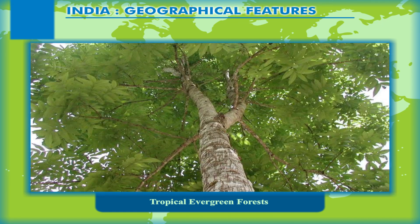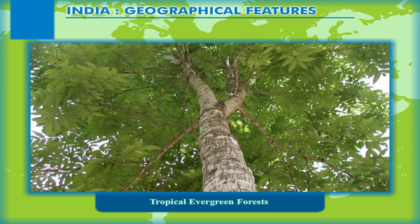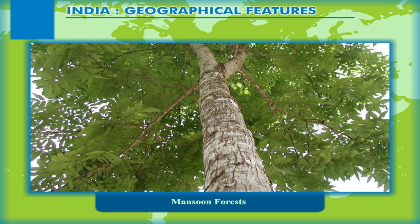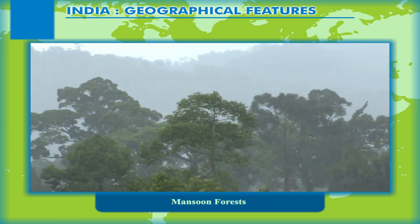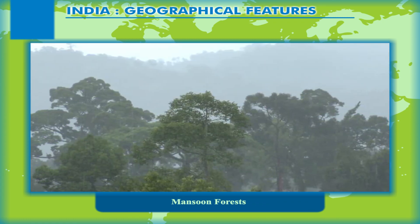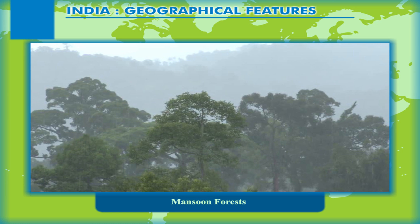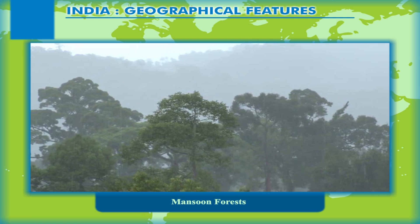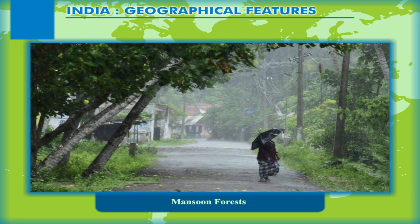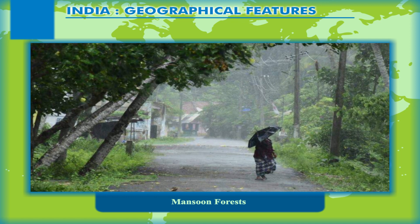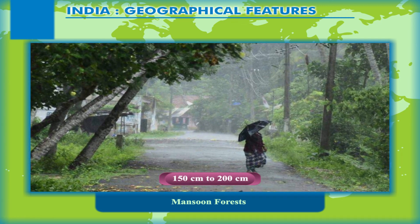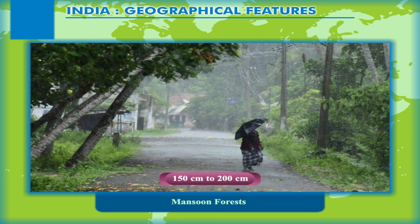Semi-evergreen forests are found in the plains of West Bengal and Odisha. Monsoon Forests. These forests mostly consist of deciduous trees and are found in areas where rainfall ranges between 150 cm to 200 cm.